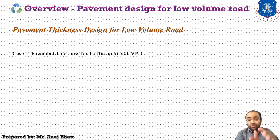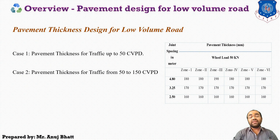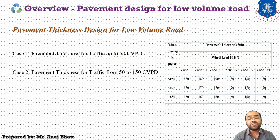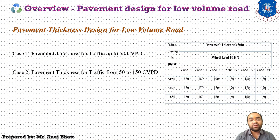Case 2 covers traffic between 50 and 150 CVPD, for which a table gives pavement thickness for different joint spacings. The criteria to satisfy are: CBR of subgrade should be 4%, the sub-base should be 75 mm water-bound macadam over 100 mm granular sub-base, and the effective subgrade reaction value is 42 MPa/m. This thickness is applicable to common subgrade soils such as clay, silt, or silty clay, and different climate zones are also considered.